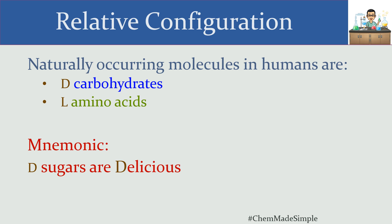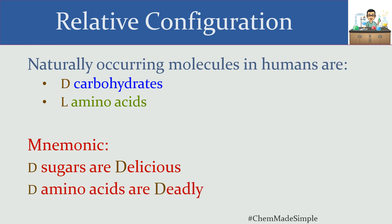One way to remember which is which is by using this mnemonic: carbohydrates or sugars are delicious — D sugars are delicious — so it's the D version of carbohydrates that are naturally occurring. For amino acids, it's quite the opposite — it's the L version that's naturally occurring. A good way to remember that is to say that D amino acids are deadly, which helps you remember that D sugars are naturally occurring and L amino acids are naturally occurring instead.